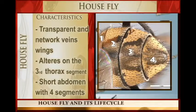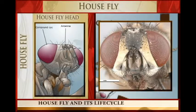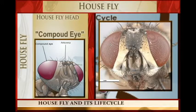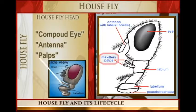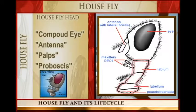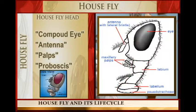If you look closely at the head of a house fly, the features you will be able to observe are the compound eyes, the antennae, the palps, and the proboscis. Those are the major features on the head.